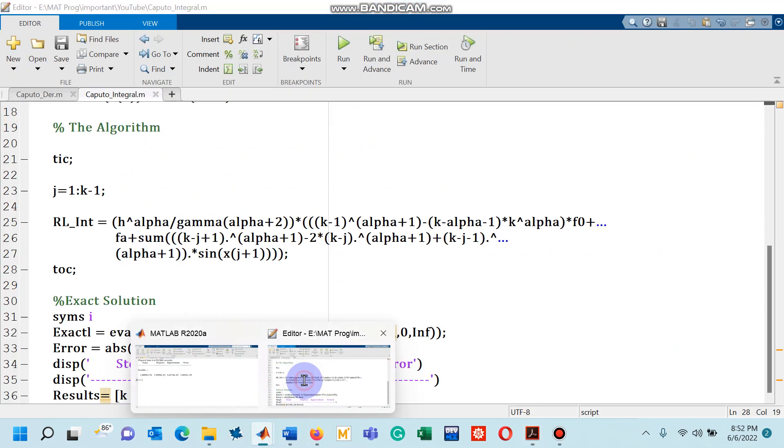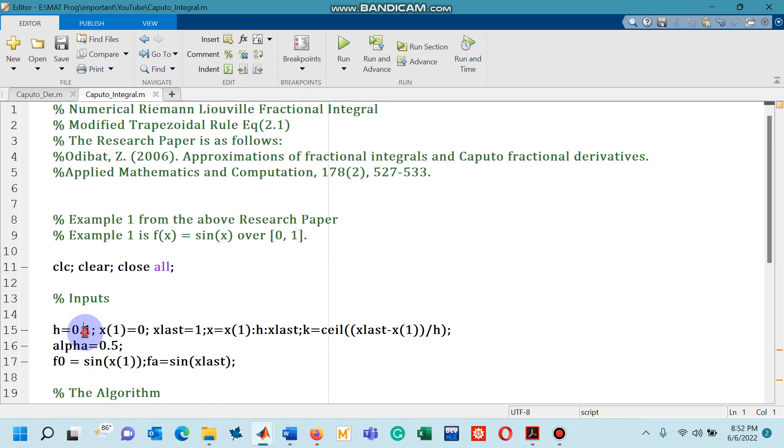Now if you change the step size you will get the values as they are shown in the research paper. So now you can perform such experiments. You can change step size, you can change the order, the fractional order, you can change the function as well, you can change the integration limit and then in short you can play with the code to get the approximate value for the Riemann-Liouville fractional integral of a function.